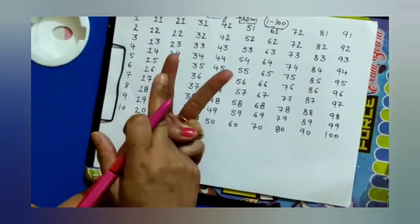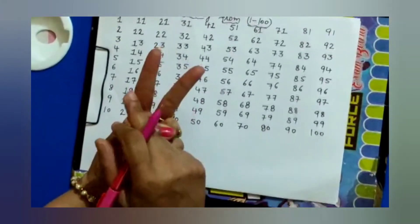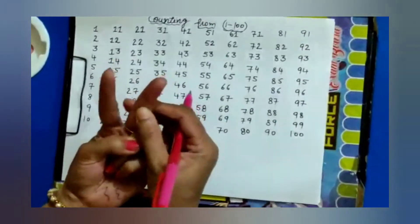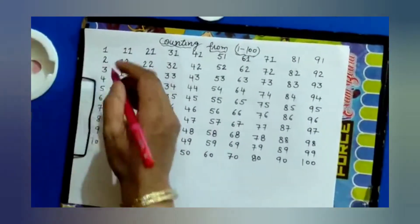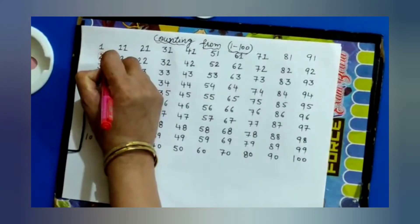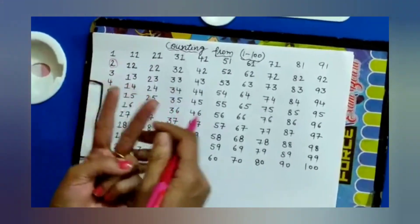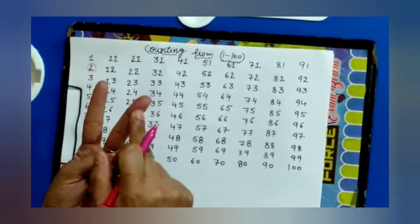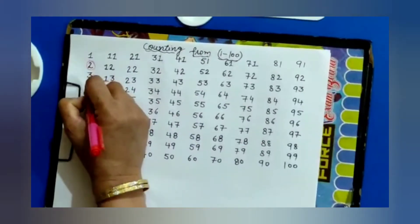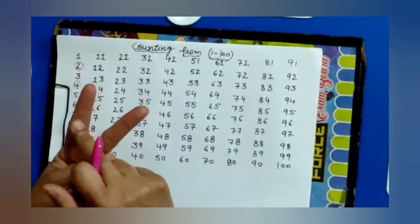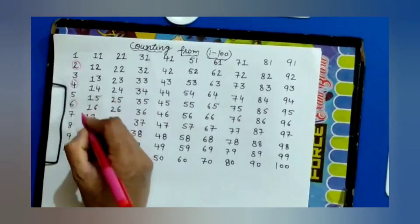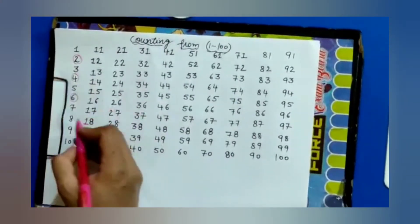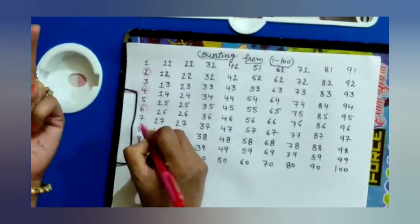With me: one, two. The number that comes on your second finger, circle that number. Now again count with me: three, four—circle the number four. Five, six—circle the number six. Seven, eight—circle the number eight.